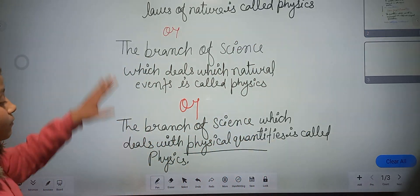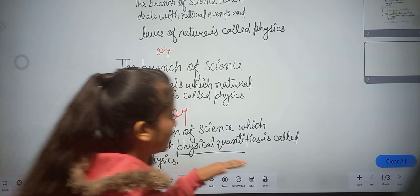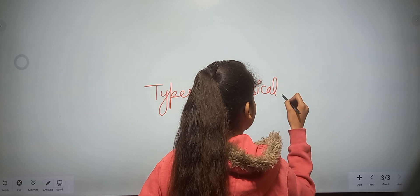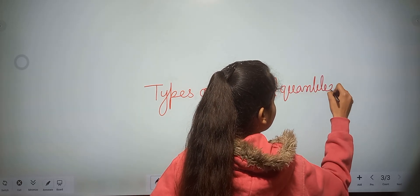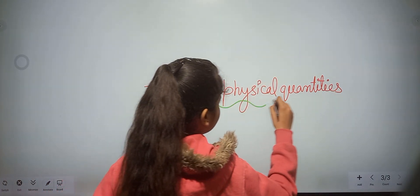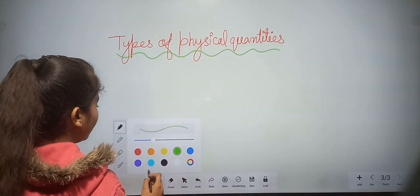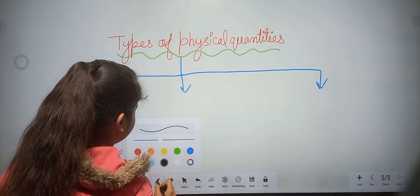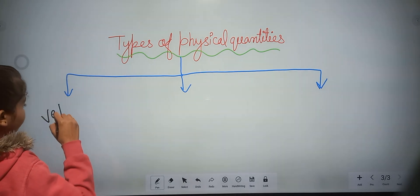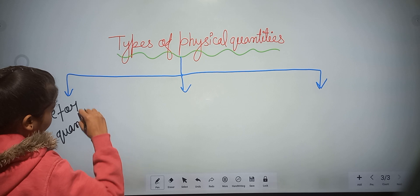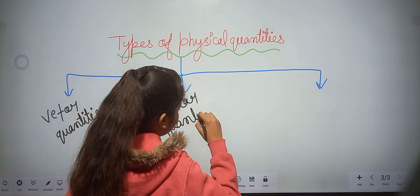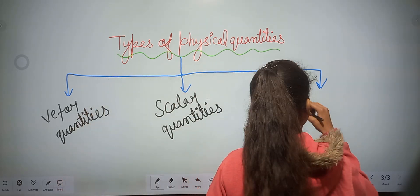Now the types of physical quantities. There are three types of physical quantities: the first one is vector quantities, the second one is scalar quantities, and the last one is tensor quantities.